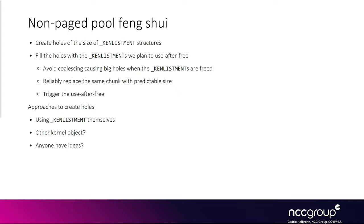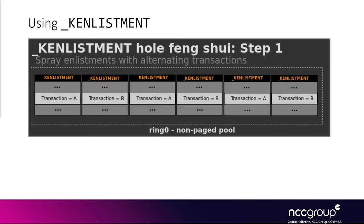The idea is to create a bunch of holes on the heap that are of k-enlistment size. We start by having one allocated, one free, one allocated, one free chunk — all adjacent — initially using any object of k-enlistment size. Then we fill the holes with k-enlistments. When we finally free the k-enlistment for the use-after-free, it's adjacent to two other allocated chunks so no coalescing will occur, and we can predict the offset of the flink pointer.